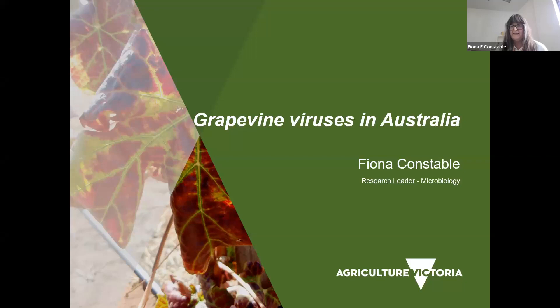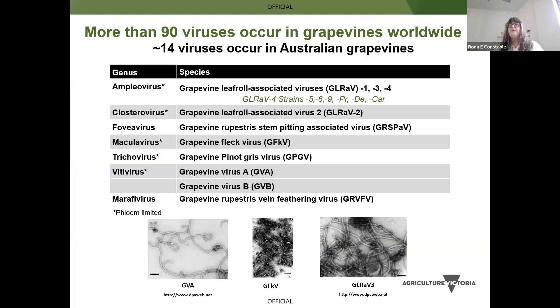I'm going to talk about viruses today, and I'm sure some of you may have heard a bit of this talk before, but I hope you still find it useful. To start: there are more than 90 viruses that occur in grapevines worldwide, and the number grows almost annually with the new technologies we apply to characterize the virome of plants.